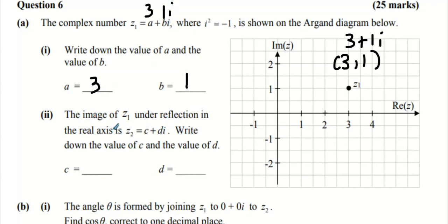Now the image under reflection in the real axis - the real axis is this black line here - reflection means it's an image directly below the same distance across. So this will be the complex number 3 - i, which is the point (3, -1). So that's 3 and that's -1.